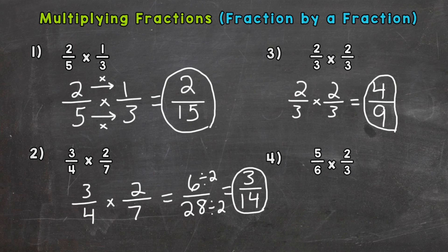Number four: we have five-sixths times two-thirds. Straight across, five times two is ten, six times three is eighteen. Any common factors other than one? Yes, the greatest common factor between ten and eighteen is two. We can divide both these fractions by two to get our final simplified fraction. Ten divided by two is five, eighteen divided by two is nine, so five-ninths.